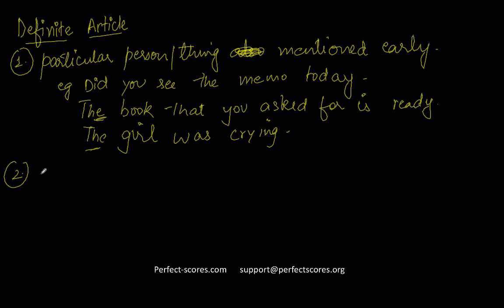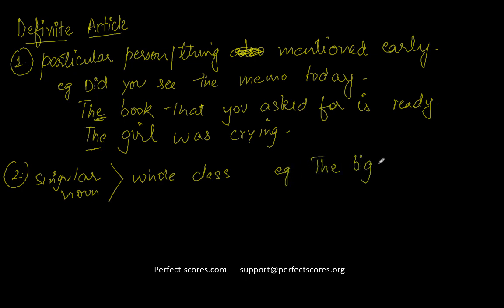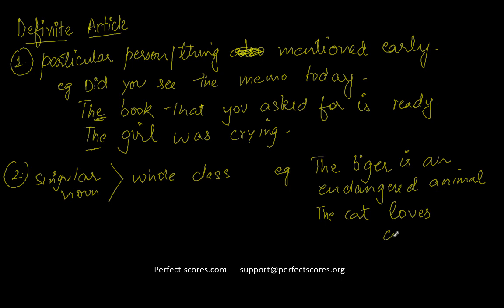The second case: when a singular noun is used to represent an entire class. For example, 'The tiger is an endangered animal' — we're talking about the entire species, all tigers. Or 'The cat loves comfort' — you're talking about all cats in general. 'The horse is a noble animal.' 'The rose is a sweet flower.' These nouns are used in a general sense to refer to the whole class.